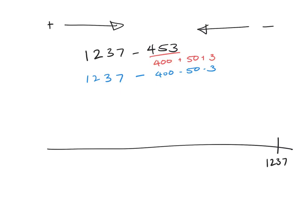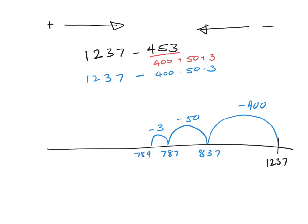Let's do our jumps. First I subtract 400 and land on 837. Then I subtract 50, so 837 minus 50 lands on 787. Finally I take away 3 and land on 784. That is one way to solve this subtraction problem using the jump strategy.